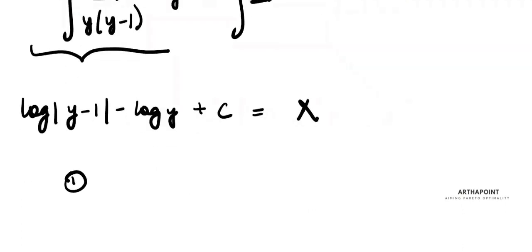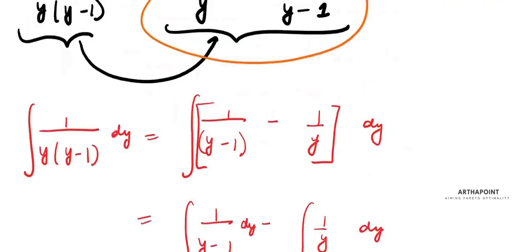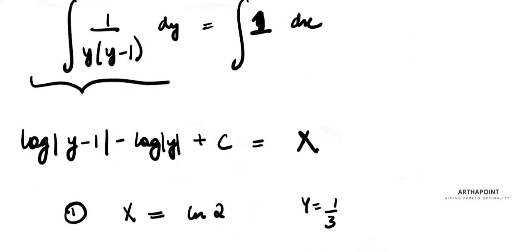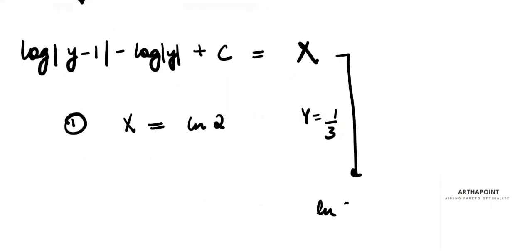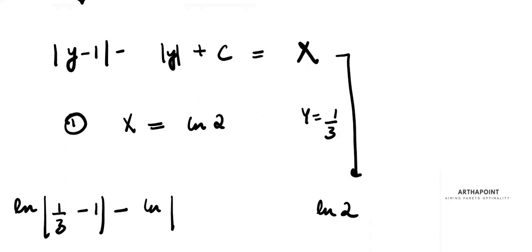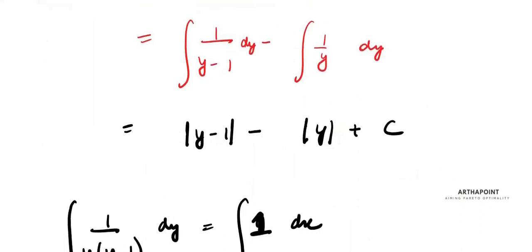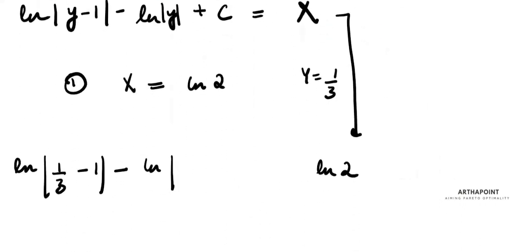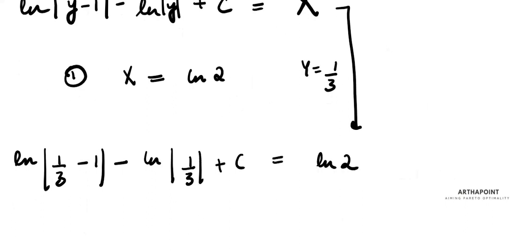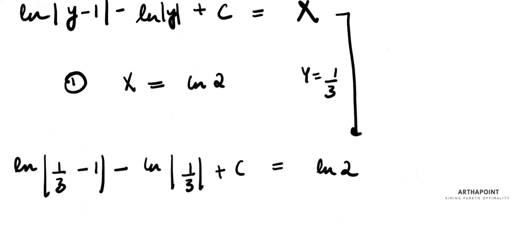Now applying the initial condition: when x = ln2, y = 1/3. Substituting: ln|1/3 - 1| - ln|1/3| + c = ln2. That gives ln|−2/3| - ln(1/3) + c = ln2.